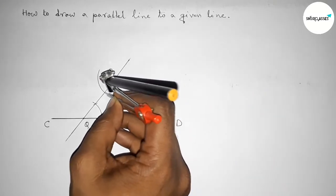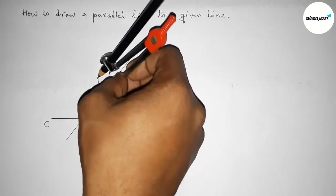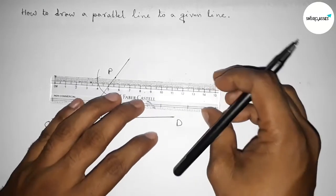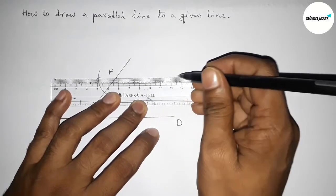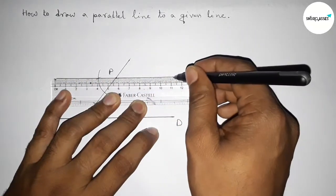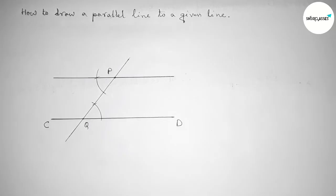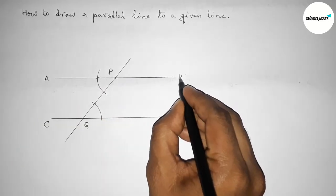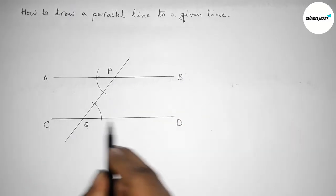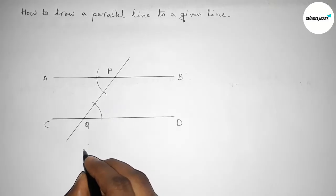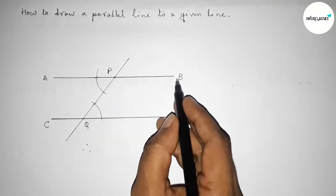So next we have to join this line. So first joining this and taking here A and here B. So we got here a line AB which is parallel with CD. Therefore, the line AB is parallel with CD.